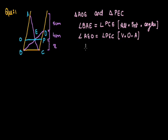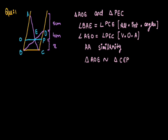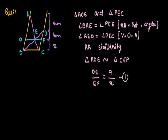Therefore, by the angle-angle criteria of similarity, triangle AOE is similar to triangle CEP. As we know, when triangles are similar, the ratios of their sides equal the ratios of their corresponding altitudes. So the ratio OE/EP would be equal to the altitude of the first triangle, that is 4 plus 5 = 9, divided by the altitude of the second triangle, that is x. This is our equation number 1.